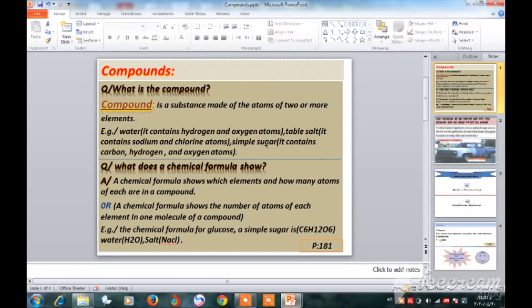Simple sugar or glucose contains carbon, hydrogen, and oxygen atoms. Suppose sugar contains three atoms.